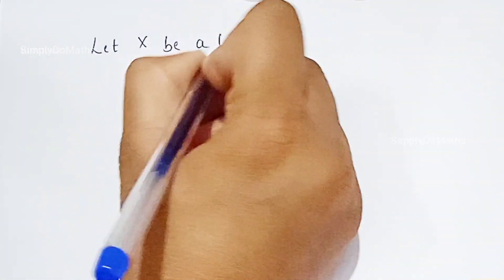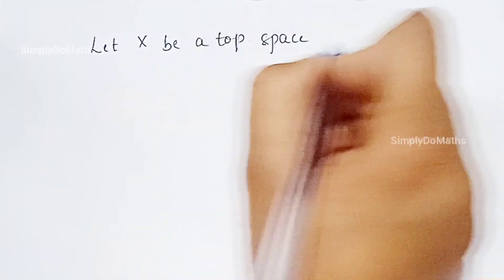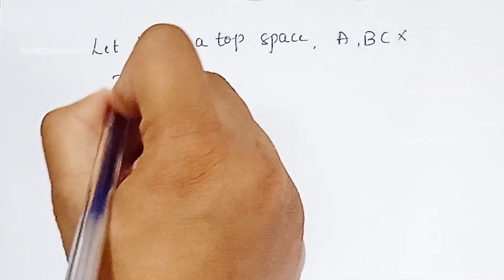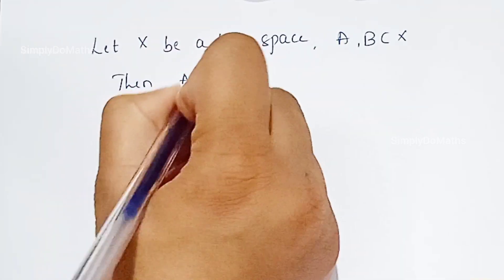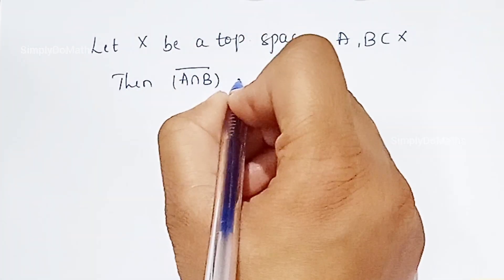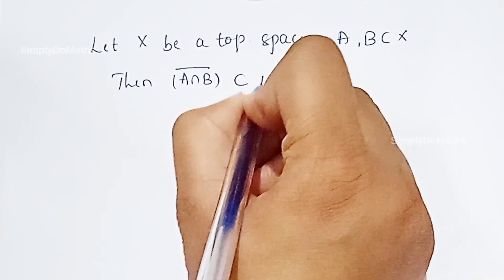Let us discuss one more property on closure — closure of a subset of a topological space. Let us consider a topological space, say capital X, and two subsets of X. Then the closure of A intersection B will always be a subset of A-bar intersection B-bar in general.